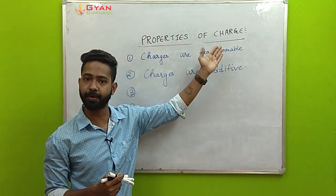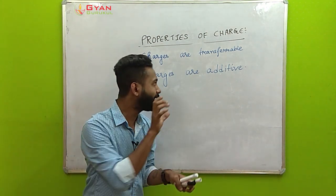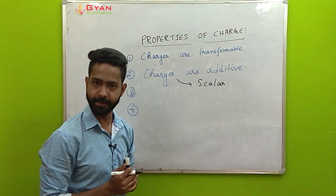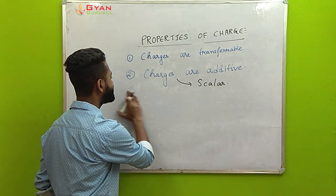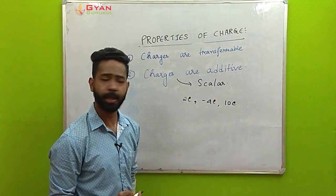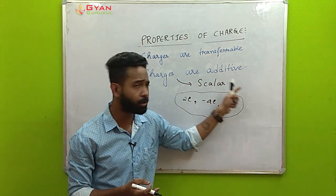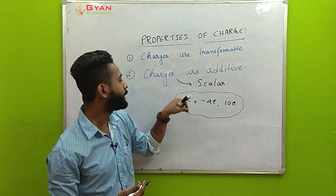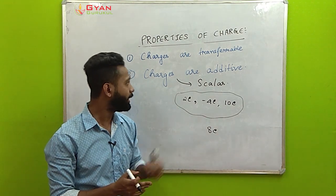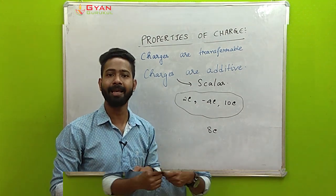The second property is that charges are additive — charges are scalar quantities. For example, if there are three charges in a region: 2 coulombs, minus 4 coulombs, and 10 coulombs, the total charge is simply 2 minus 4 plus 10, which equals 8 coulombs. So multiple discrete charges can be added directly to get the total charge in a region.